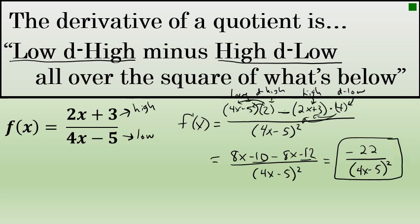I found this by considering the numerator of the original fraction as the high part and the denominator as the low part, then differentiating using the quotient rule: low d high minus high d low, all over the square of what's below.